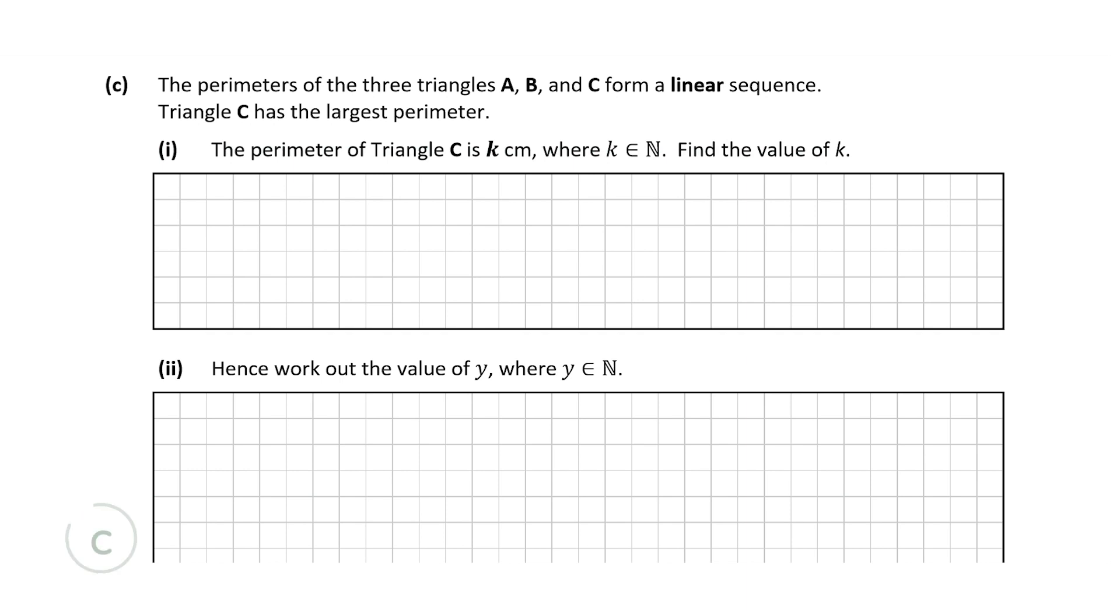Now we're told in question C that the perimeters of the three triangles A, B and C form a linear sequence. So that means that their perimeters, when they're going up in ascending order, they go up by the same amount every time. Now we're told that triangle C has the largest perimeter so the perimeter of triangle C is K centimeters and it asks us to find the value of K.